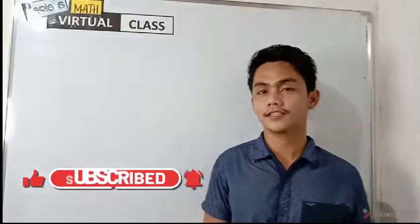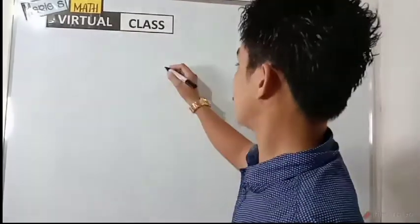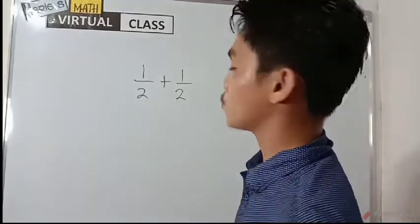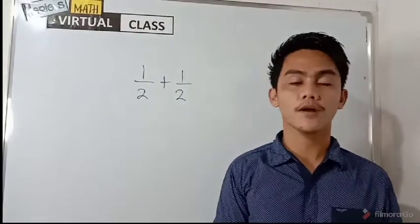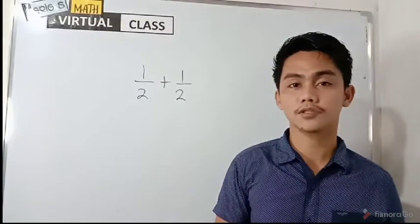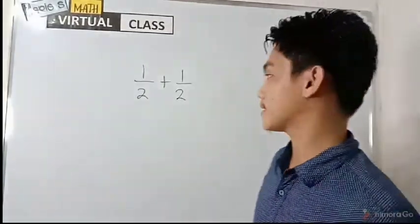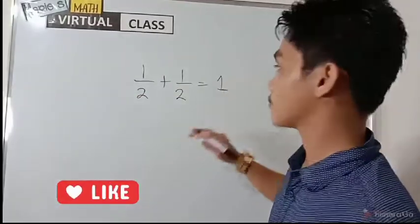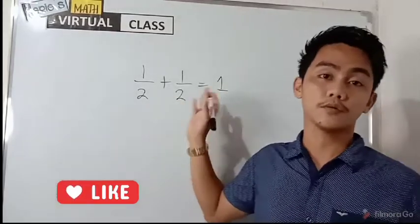To begin with, let us consider this example. So we have on the board the expression one-half plus one-half. Everyone can easily get the answer to this expression. We know that one-half of a kilo plus one-half of a kilo is equal to one kilo, or one-half of something plus one-half of something is one whole of something. But what is really the rule or the process behind this?